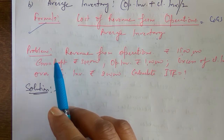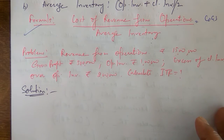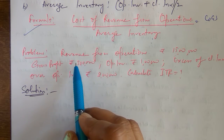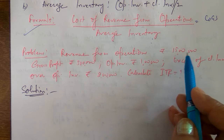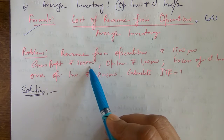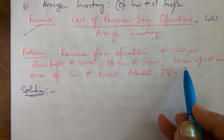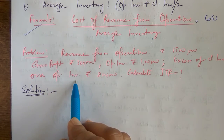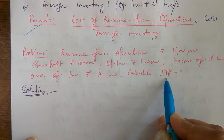Now let us understand this formula through a question. Given: revenue from operations (sales) = ₹15 lakh, gross profit = ₹3 lakh, opening inventory = ₹1 lakh, excess of closing inventory over opening inventory = ₹2 lakh. Calculate ITR.